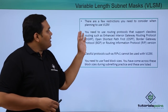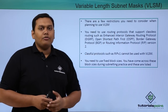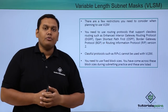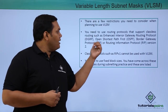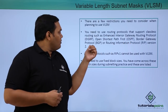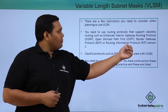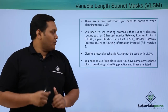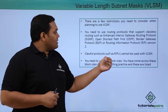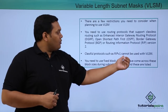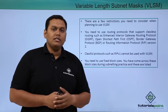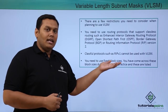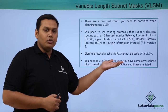There are restrictions you must follow with VLSM. You need to configure classless routing protocols such as EIGRP, OSPF, Border Gateway Protocol, and RIP version 2. Classful protocols such as RIP version 1 cannot be used with VLSM, as they do not support classless networks.